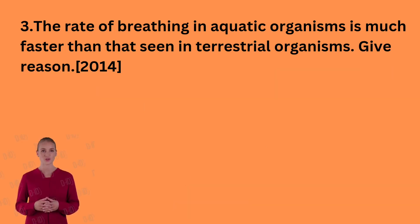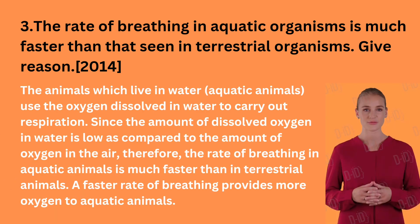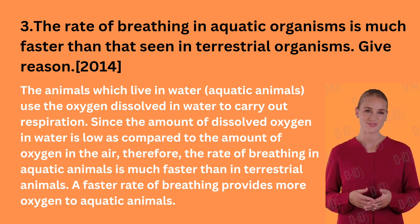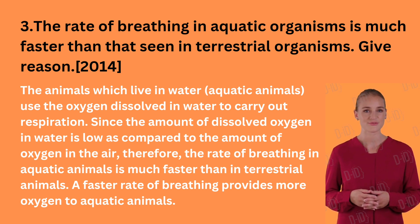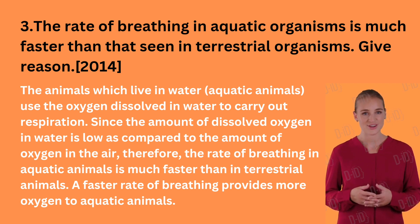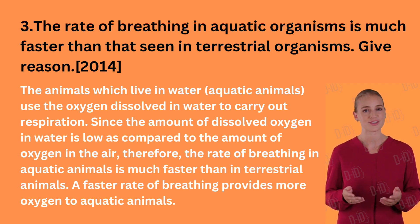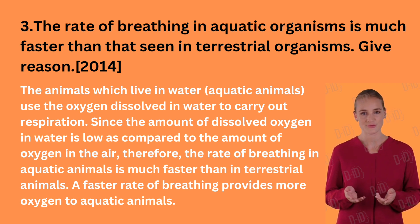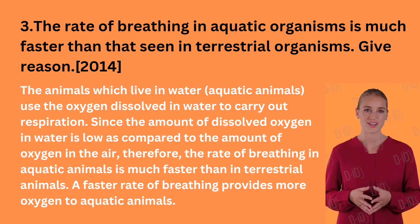The rate of breathing in aquatic organisms is much faster than that seen in terrestrial organisms. Give reason. The animals which live in water — aquatic animals — use the oxygen dissolved in water to carry out respiration. Since the amount of dissolved oxygen in water is low compared to the amount of oxygen in the air, therefore the rate of breathing in aquatic animals is much faster than in terrestrial animals. A faster rate of breathing provides more oxygen to aquatic animals.